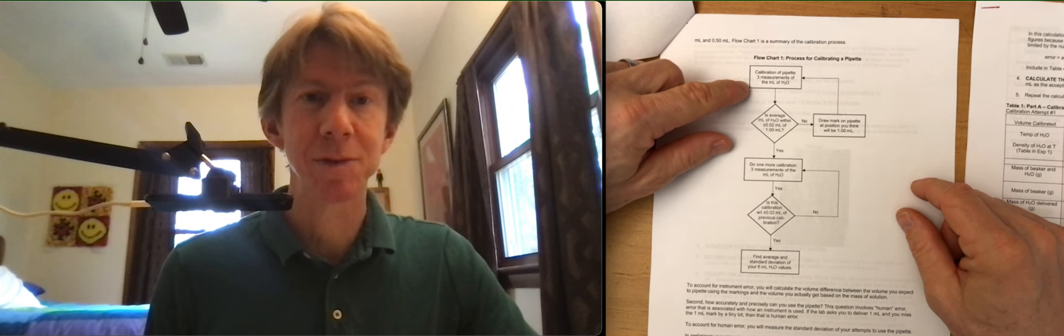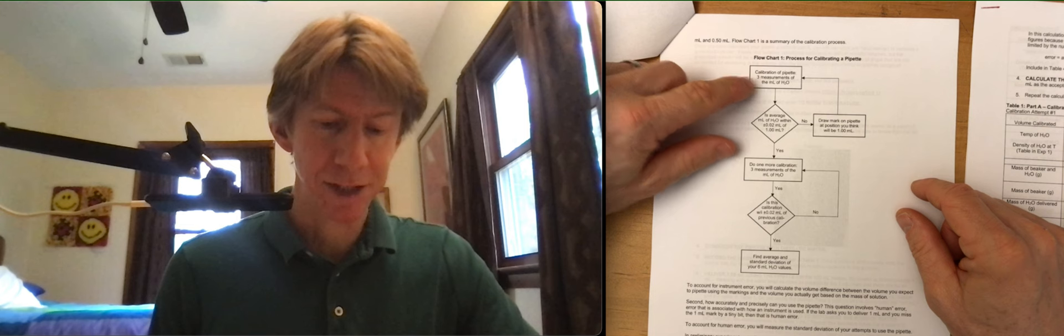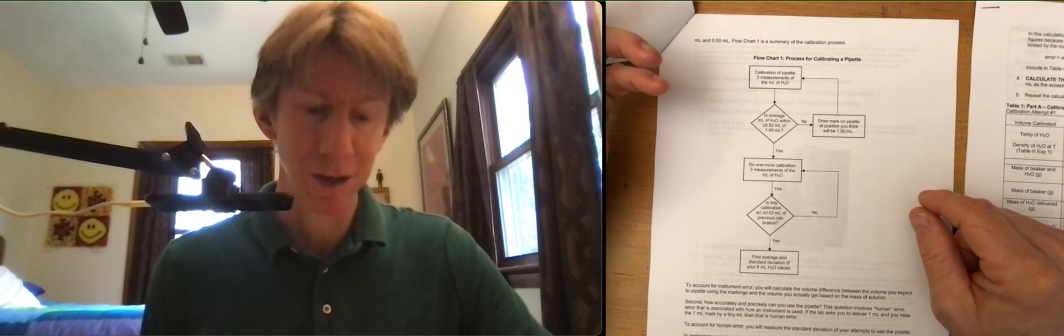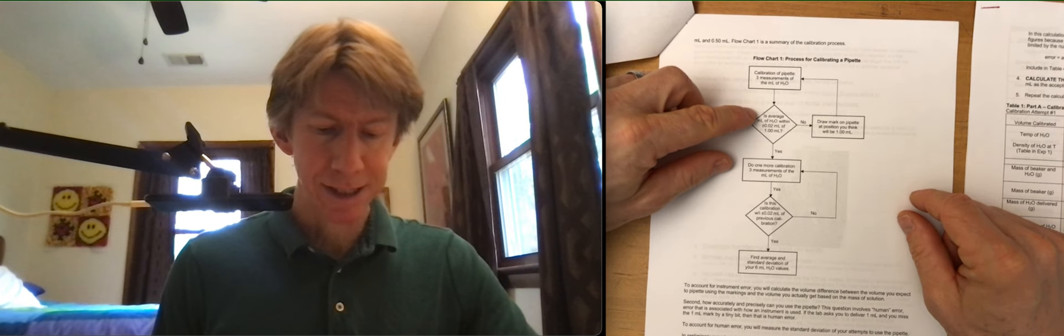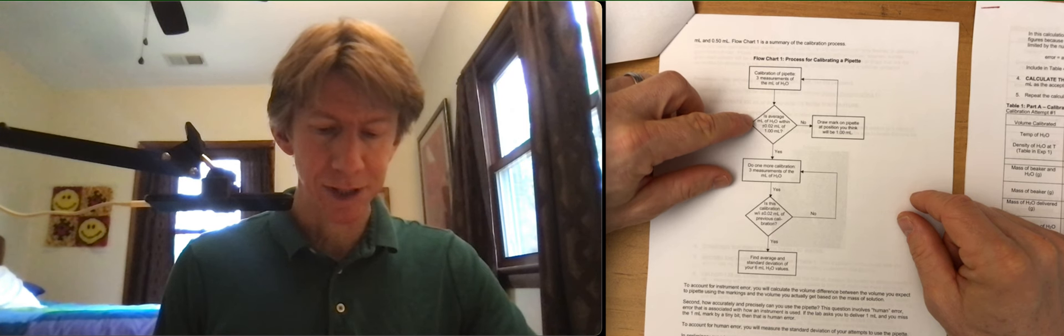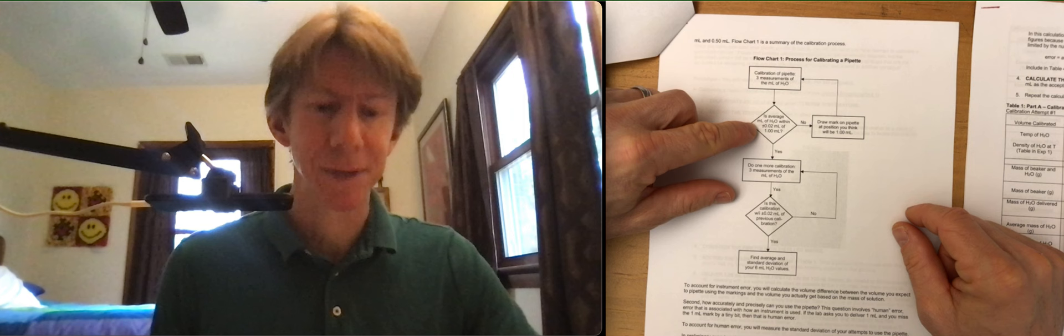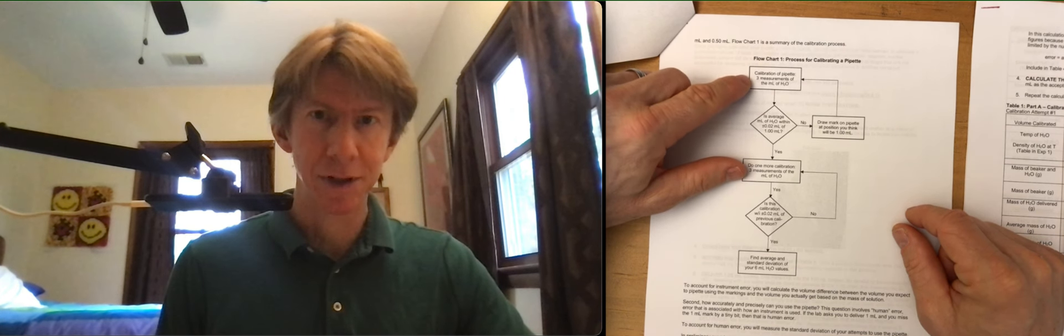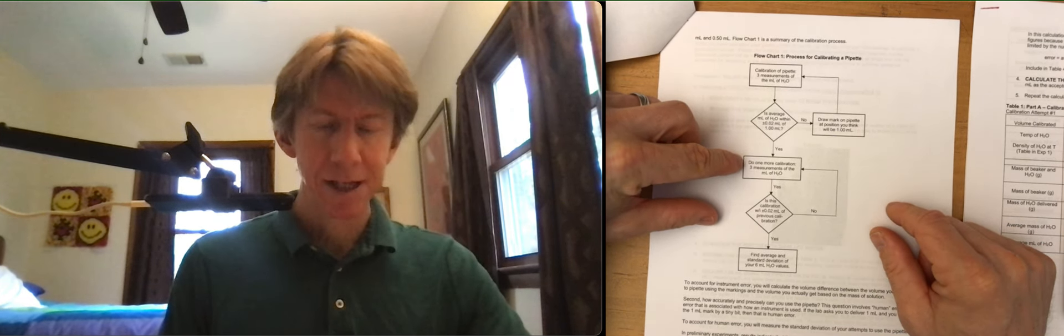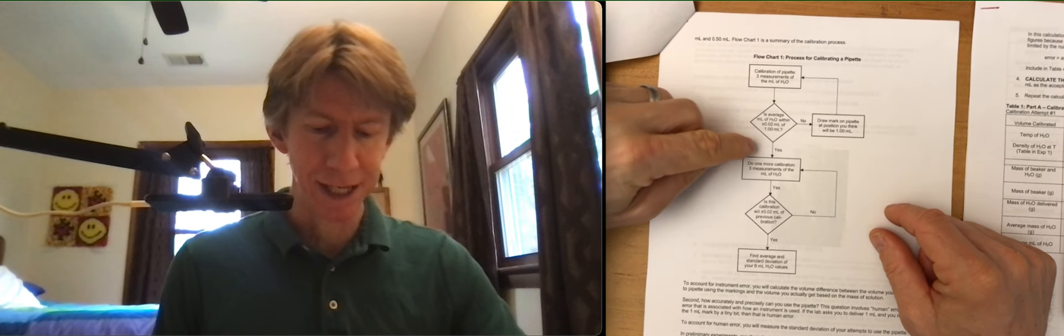You're going to do three measurements of the milliliters of H2O for one milliliter let's say. And then is the average milliliters of H2O within plus or minus 0.02 milliliters of one milliliter? That's the average of the three measurements. Yes. Those three measurements are good.